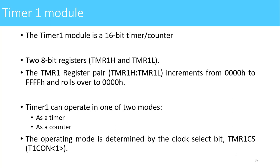The Timer1 module is a 16-bit timer/counter module. It can count from 0000 hex to FFFF hex. The value of this timer counter is stored in two 8-bit registers named TMR1H and TMR1L. TMR1H is the higher register and TMR1L is the lower register. The TMR1 register pair increments from 0000 hex to FFFF hex, and once the value reaches FFFF hex, if one more clock pulse is given, the value rolls over to 0000 hex.